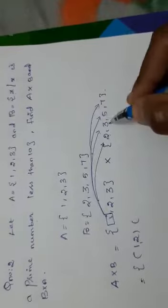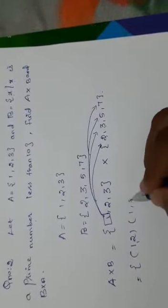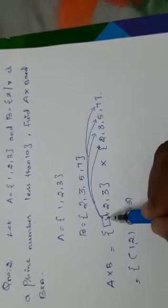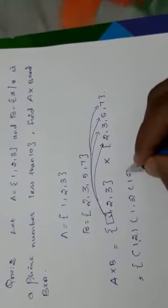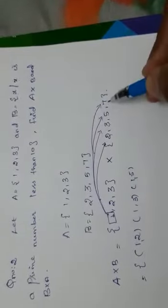Again with 1, we have to pair it with 3. 1 comma 3. Next, 1 comma 5. Next, 1 comma 7.